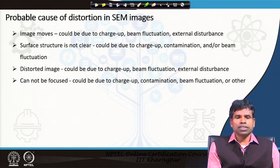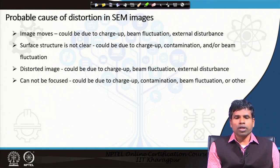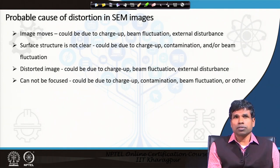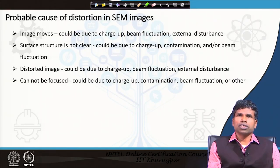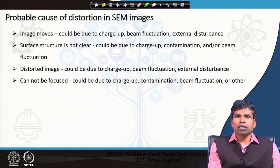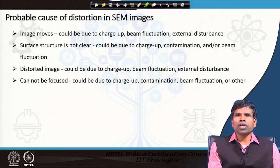Before showing a good SEM image, let us see the probable causes which prevent us from getting one. The first problem is that the image may morph — you can find a discontinuous image because when an image morphs you see distortion. This could be due to charging up, which happens when the sample is insulating. Additionally, the image can morph if the electron beam fluctuates, or due to external disturbances such as magnetic field, mechanical vibration, or noise.